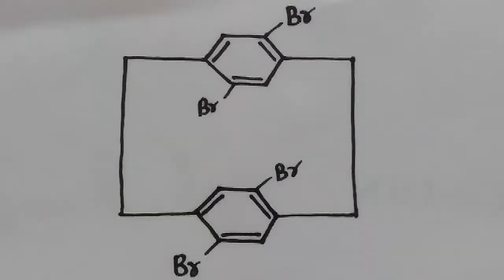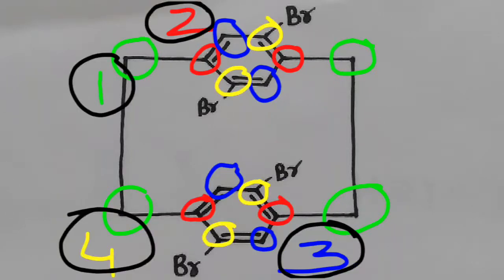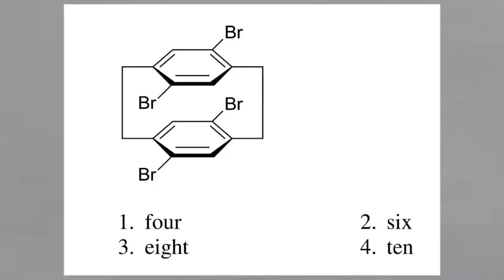These carbons are equivalent and will give one signal. These equivalent carbons will give the second signal. These equivalent carbons will give the third signal. These equivalent carbons will give the fourth signal. Therefore, option A, that is four signals, is the right choice.